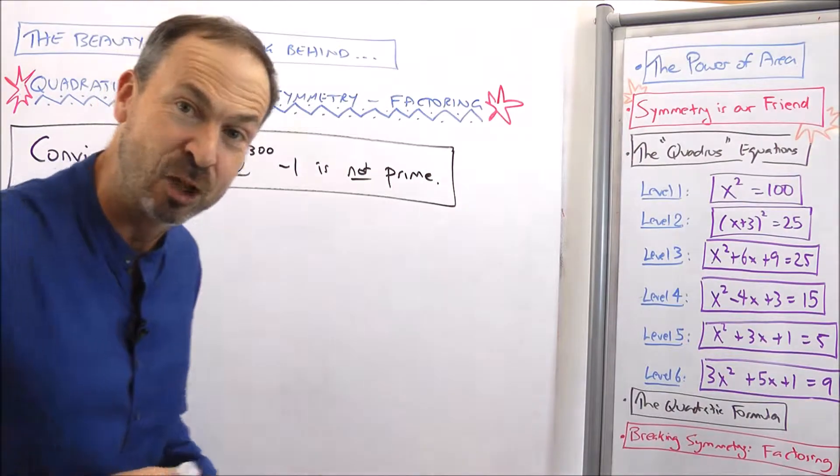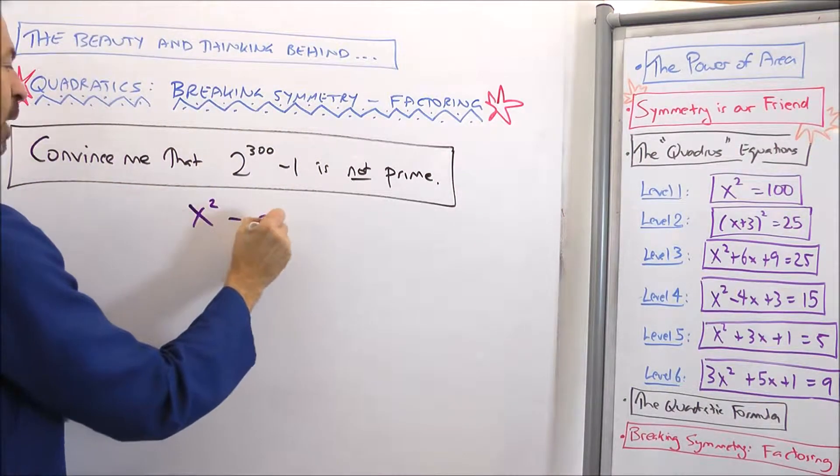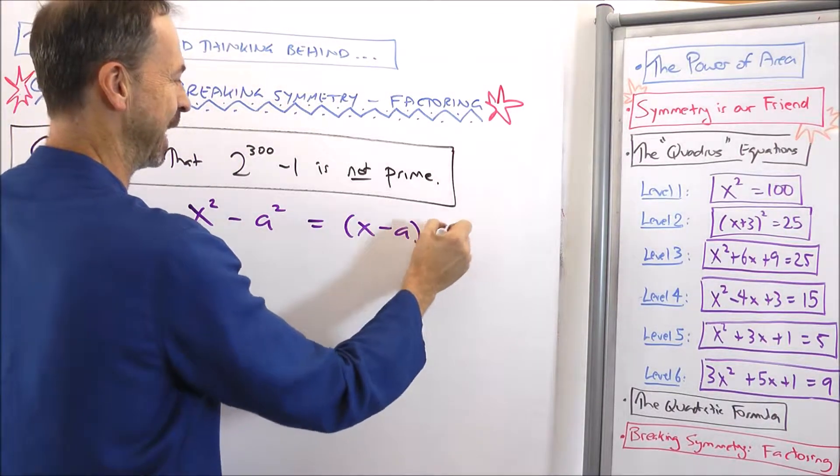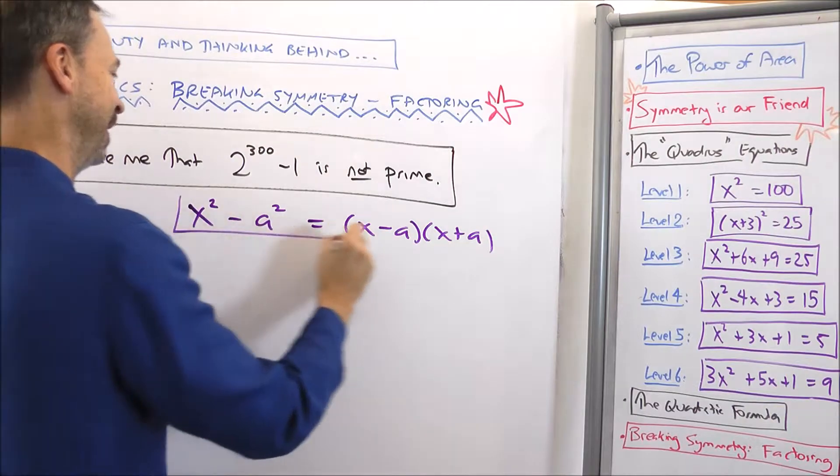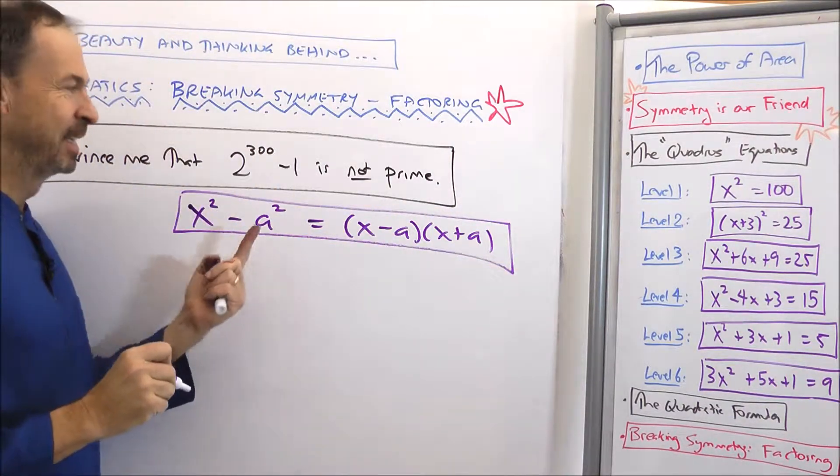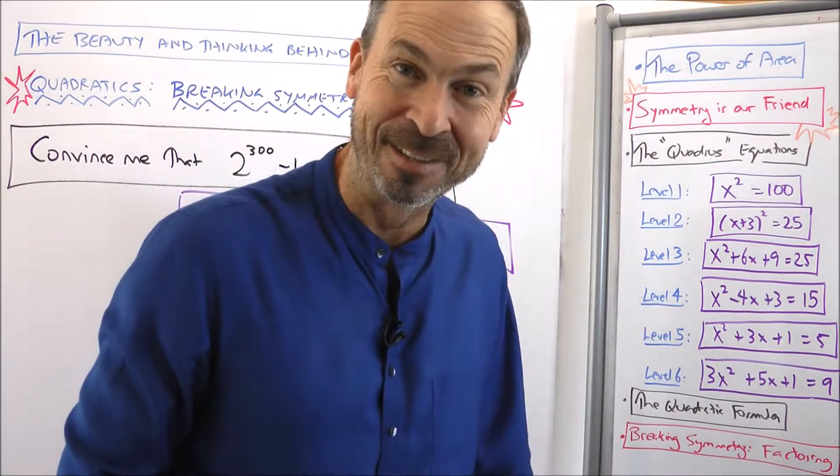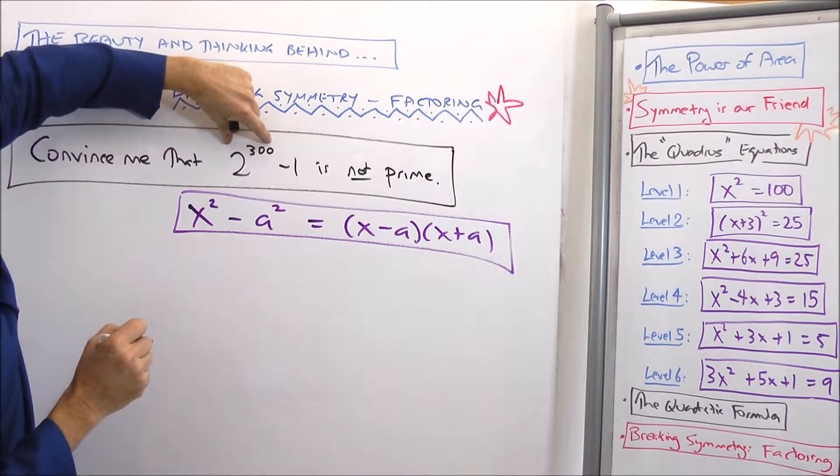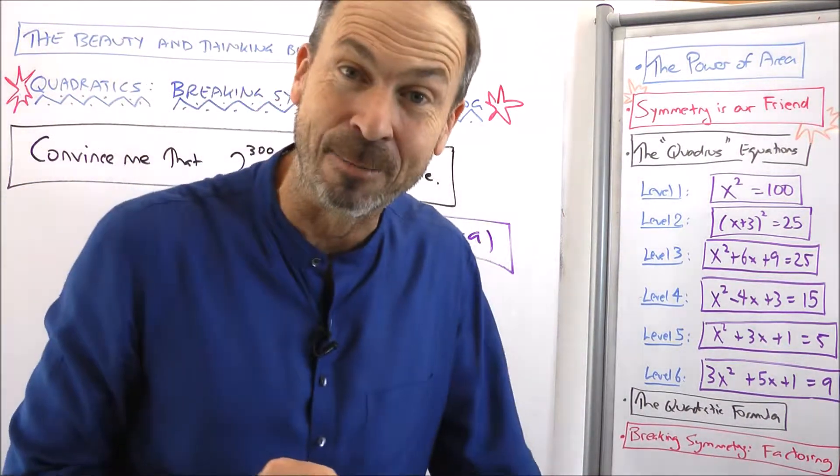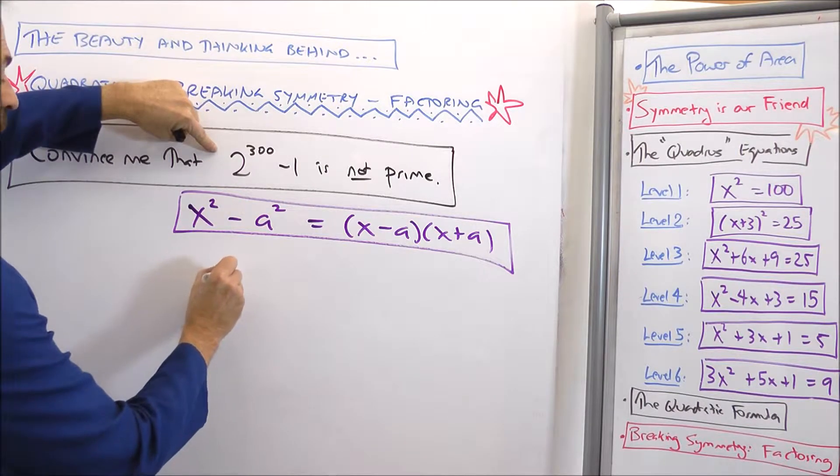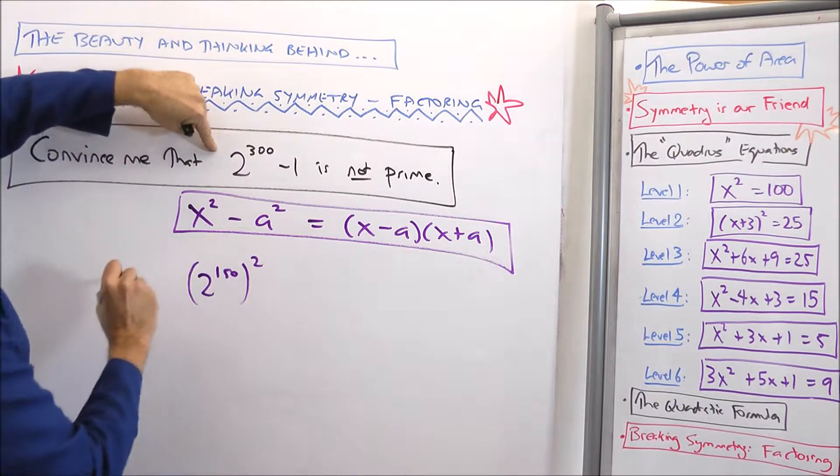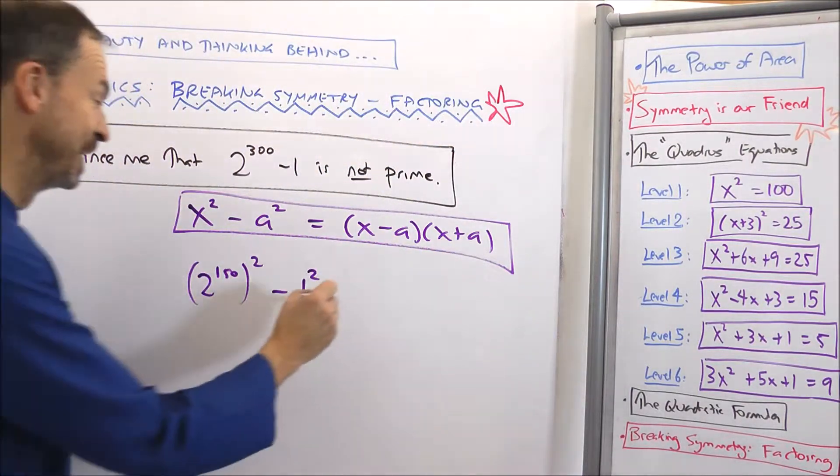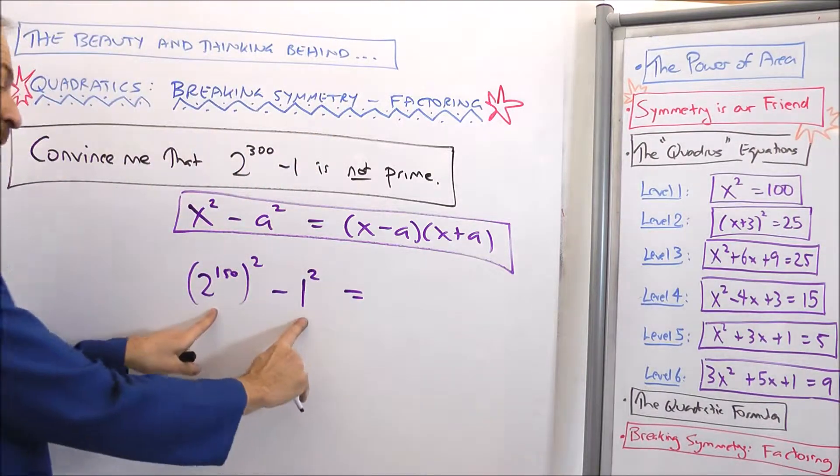Now we just did the difference of two squares formula that something squared take away something squared. The difference of two squares literally does actually factor as (x - a)(x + a). And here's the thing. This formula tells me that this number also factors. Therefore, if it factors, it's not prime. So I have to think of this as a square number and I have to think of this as a square number. Because 2 to the 300th is really (2^150)² minus 1 is a square number. It's 1².